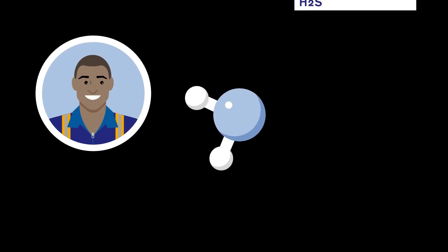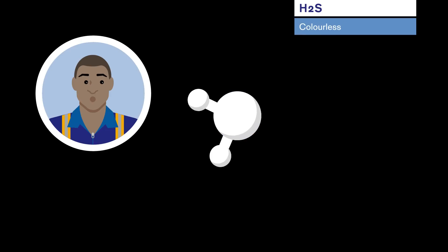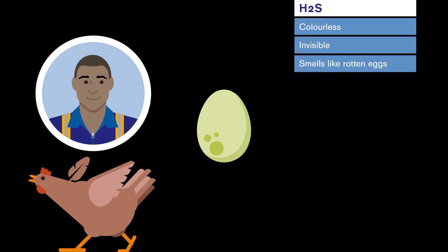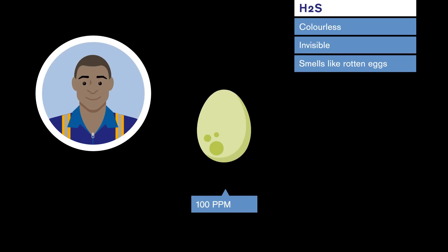Hydrogen sulfide is highly dangerous. It is a colorless and invisible gas that smells like rotten eggs up to a concentration of 100 ppm.